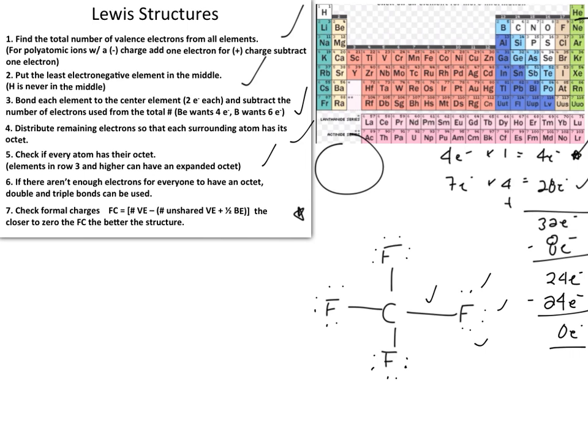The sum of all formal charges must equal the overall charge of the molecule. Let's start with carbon as our central atom. Calculating carbon's formal charge using the formula: formal charge = number of valence electrons − unshared valence electrons − ½(bonding electrons). Carbon has four valence electrons.